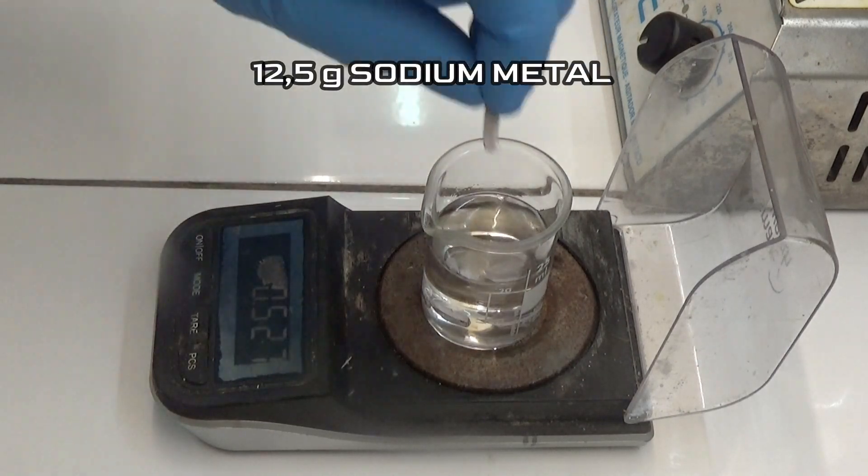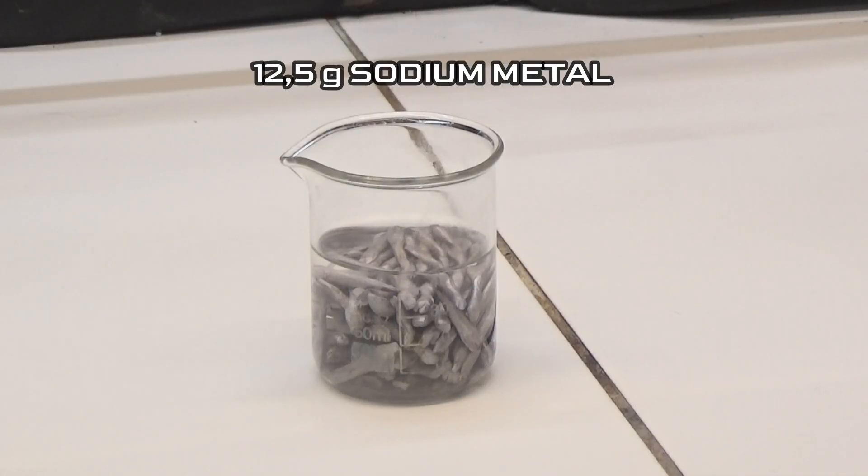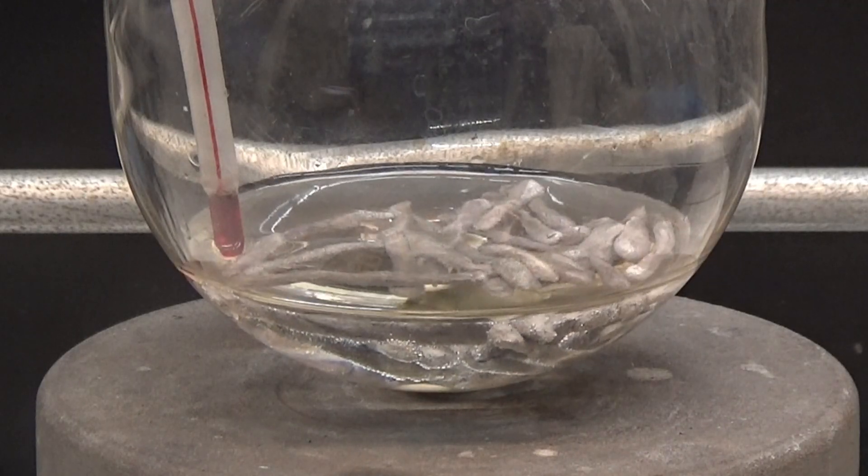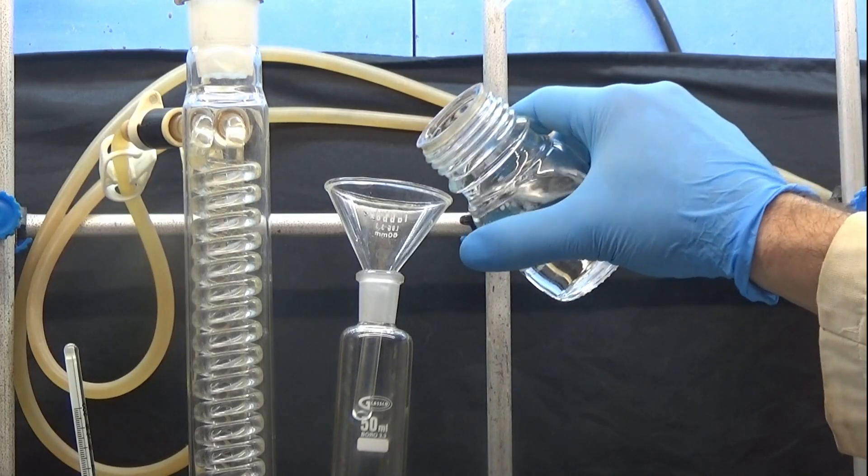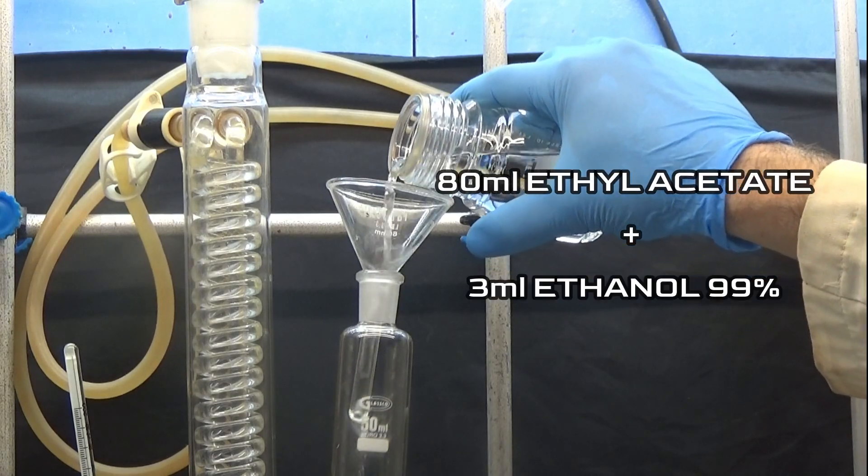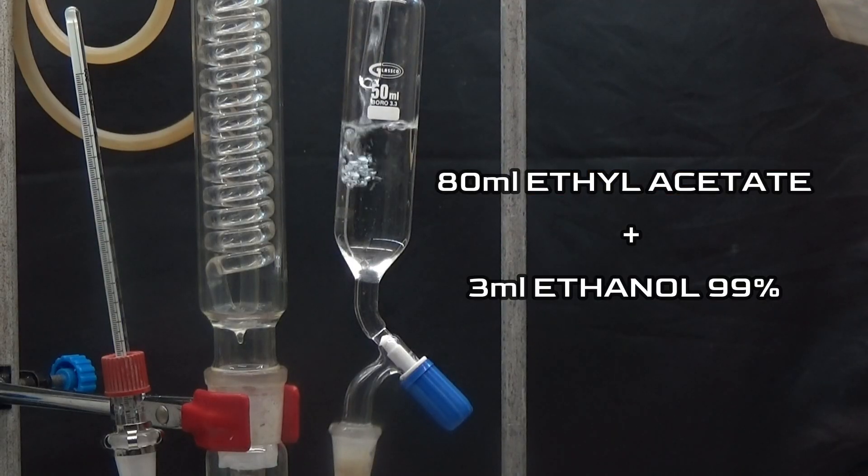Weigh 12.5g of sodium metal chips into a beaker filled with hexane. Add the sodium to the flask containing the diethyl phthalate. Pour 80ml of ethyl acetate and 3ml of 99% ethanol into the addition funnel.